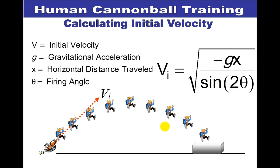Let's put this motion together. When the projectile is launched, he is actually traveling in two different directions — the vertical direction and the horizontal direction. The combination of these two makes him appear to travel in a diagonal direction.